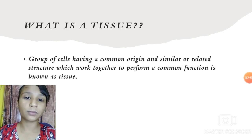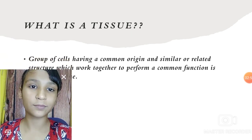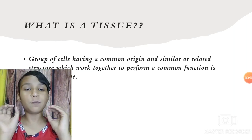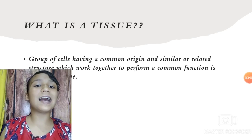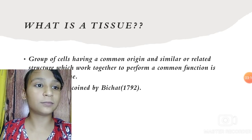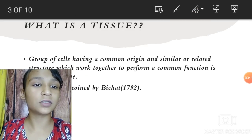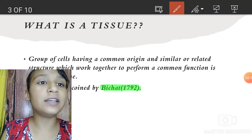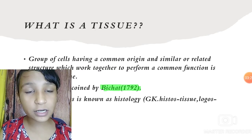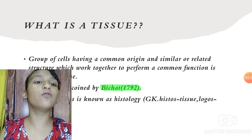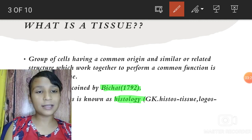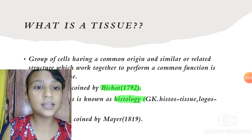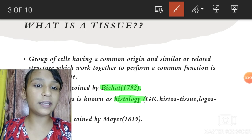So what is a tissue? Tissue is a group of cells working together to perform a specific function. The term tissue was coined by Bichat in 1792. If you want to study tissues at a higher level, you study histology — the study of tissues. The term histology was coined by Meyer in 1819.